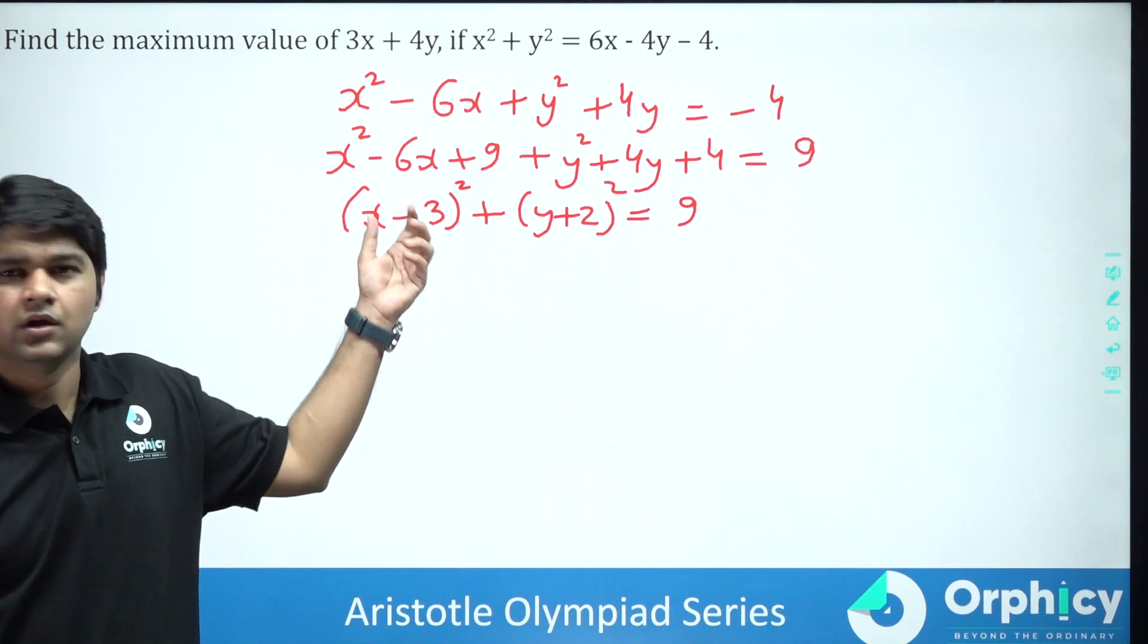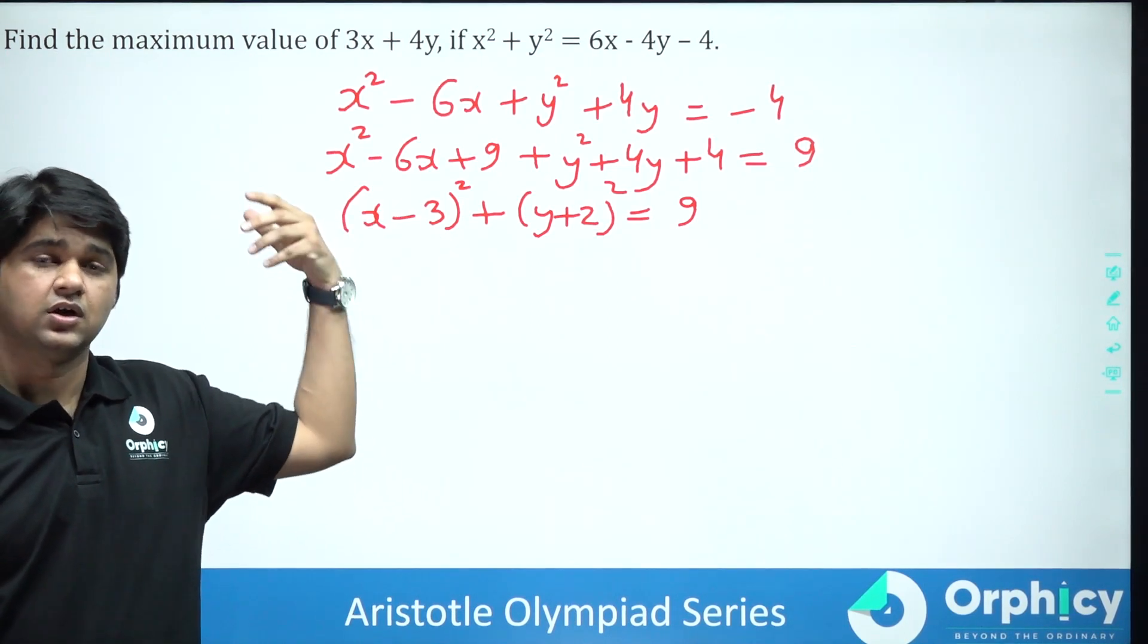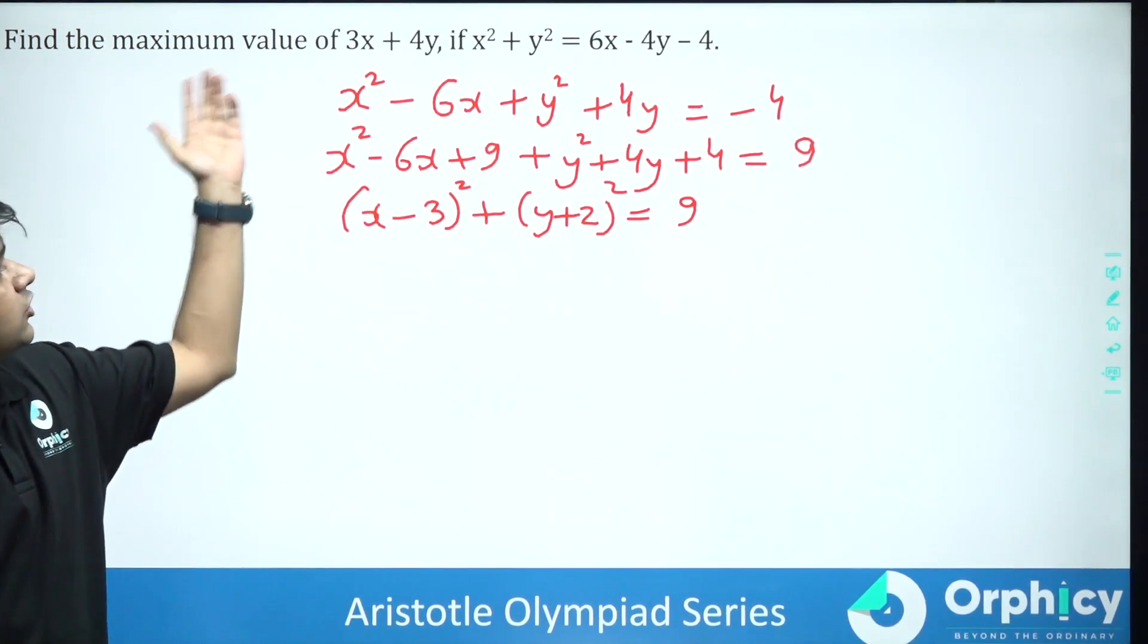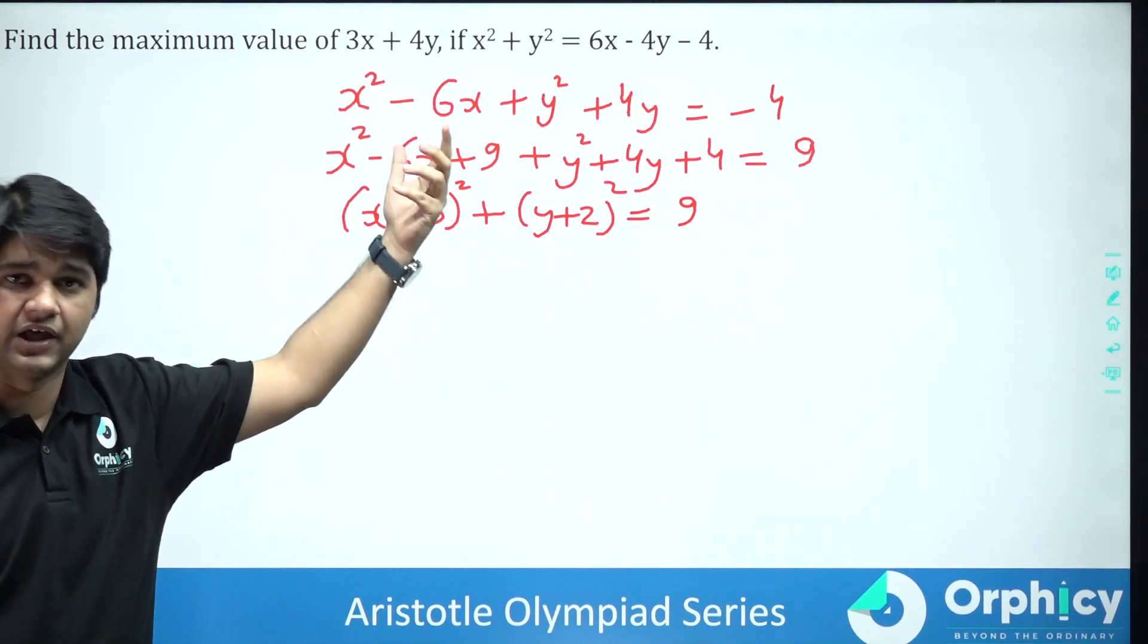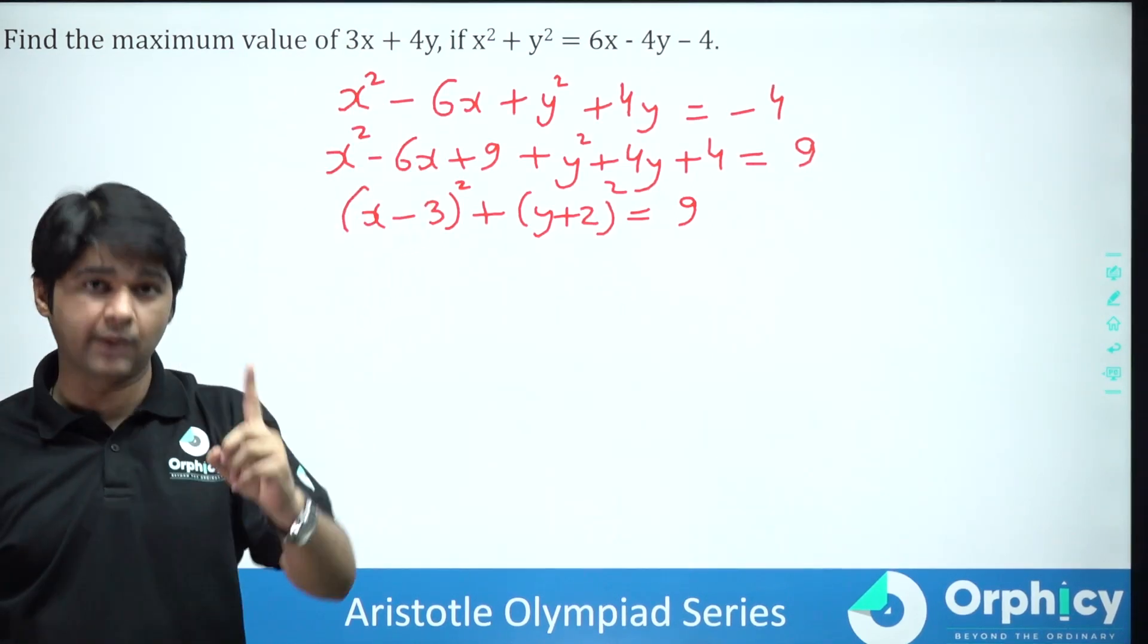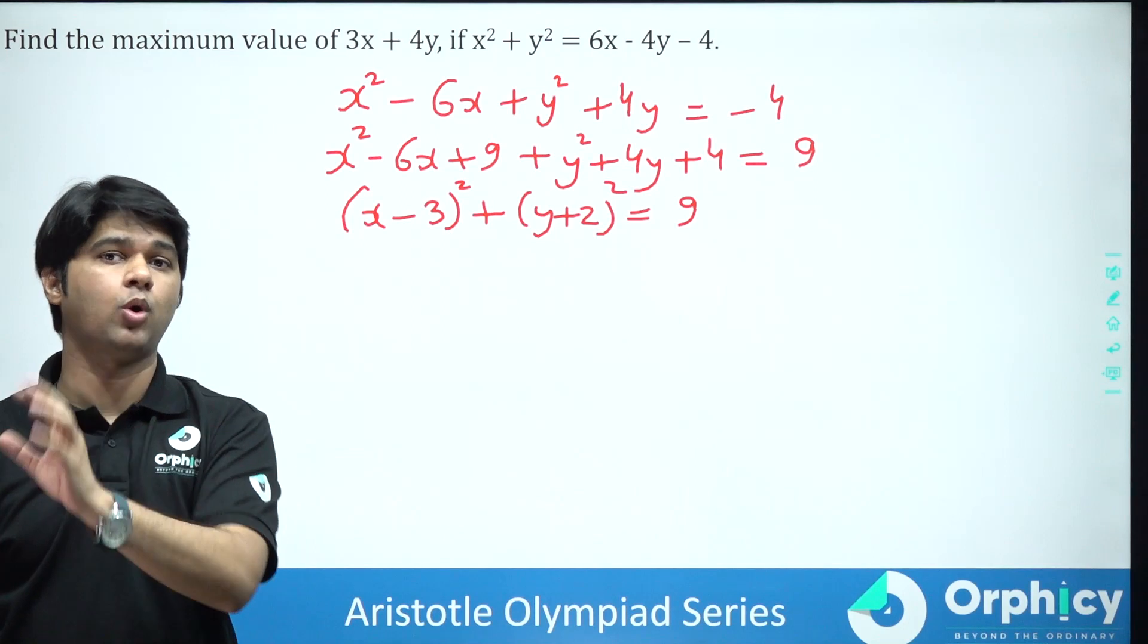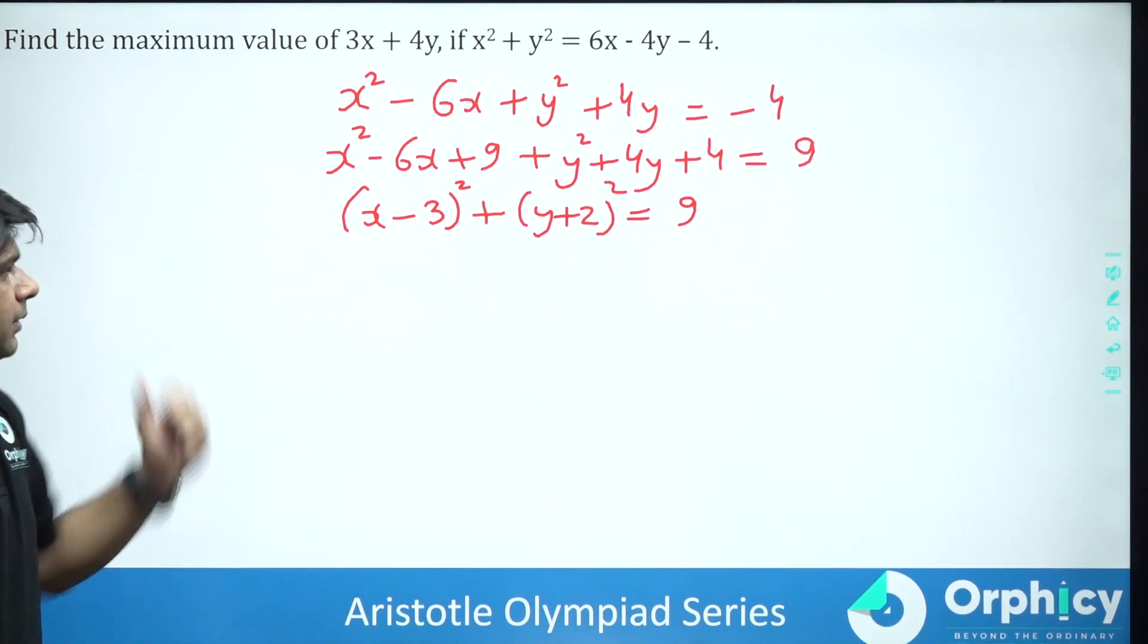Whenever you are given an expression which is a perfect square and you are also given an expression which is linear, the first thing that should come to your mind is Cauchy-Schwarz inequality. So what will we do here?